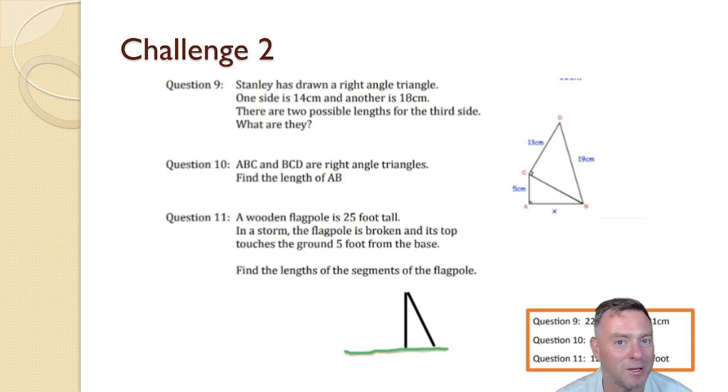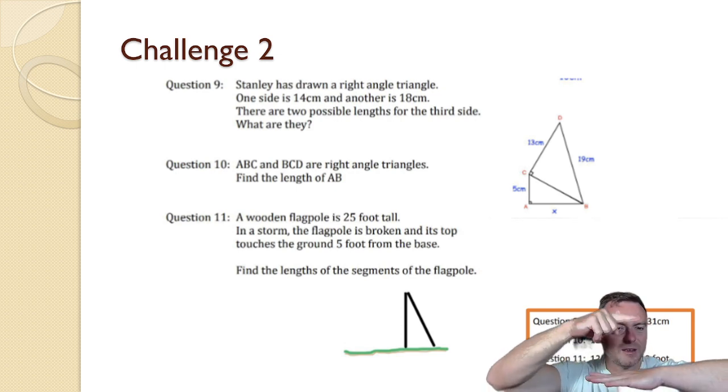Well firstly it depends which one you want to use as the hypotenuse. So if you said they're both the shorter side, you could say 14 and 18 and then you'd get 22.80. The other option then is 18 is the hypotenuse and then 14, and then the other side would be 11.31.